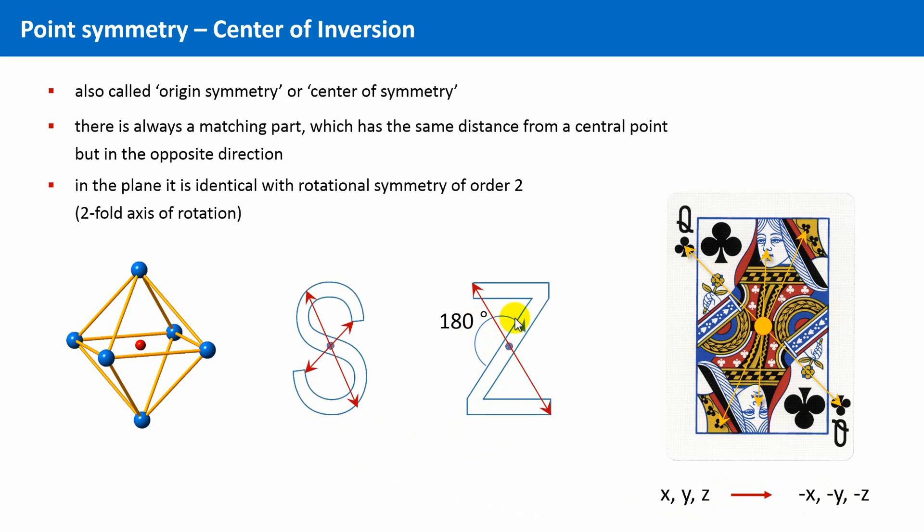The symbol for such a center of inversion is I, or 1 bar, which is only a different notation from minus 1 in a crystallographic context.